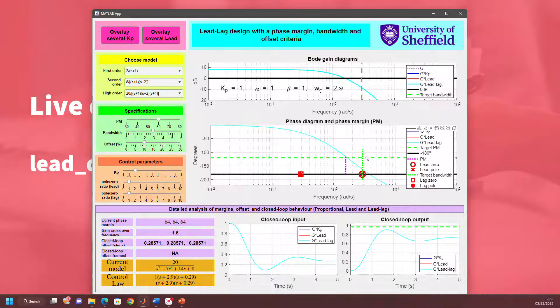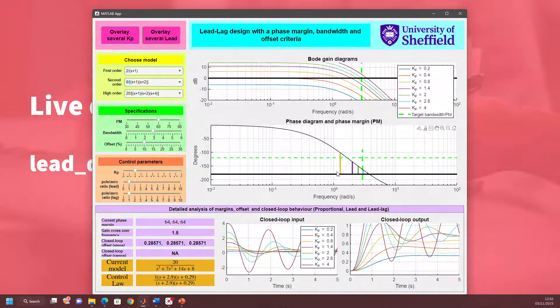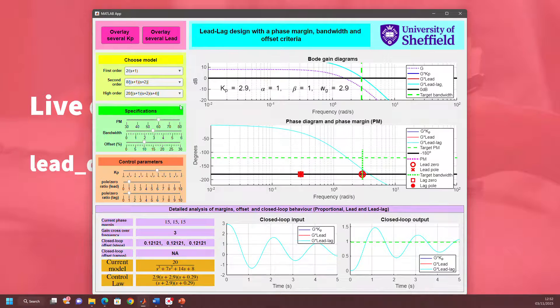If I go to three, this is achievable. The phase margin shift required is not going to be huge. The first step is to choose a proportional design to get that bandwidth. Let's use this button, overlay several Kp. You can see that dotted green line is marked. What gain goes with that blue? It looks like it's something like 2.8. So let's try a gain of about 2.8.